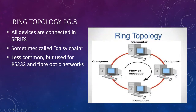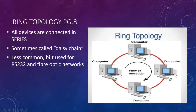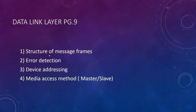Ring topology: all devices are connected in series — or daisy-chained — a little less common. Used for RS-232 and often in some fiber optic networks. The downside is that if there's a break in the ring, it will stop data from flowing effectively. That's why we have redundancy. So those were all things in the physical layer: wires, connectors, signal types, topology.